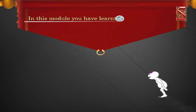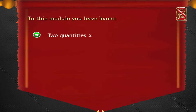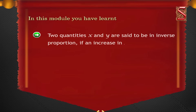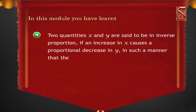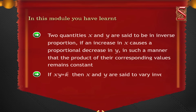In this lesson, you have learnt that two quantities X and Y are said to be in inverse proportion if an increase in X causes a proportional decrease in Y such that the product of their corresponding values remains constant. If X × Y = K, then X and Y are said to vary inversely.